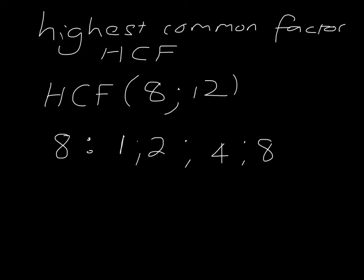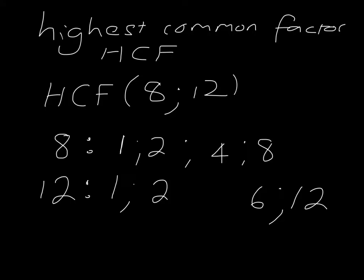The factors of 8 are 1, 2, 4, and 8. Now let's do exactly the same for 12. 1 is a factor with partner 12, 2 is a factor with partner 6, 3 is a factor with partner 4. When we reach 4 we've already got it, so we've got all the factors of 12: 1, 2, 3, 4, 6, and 12.